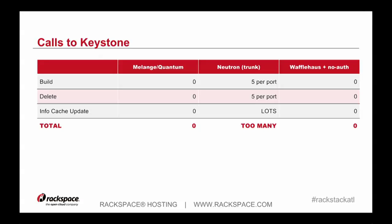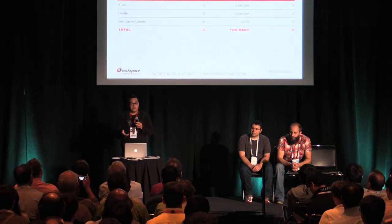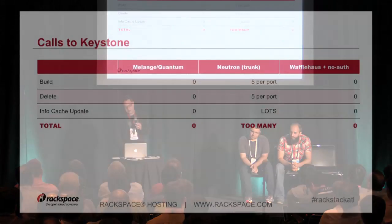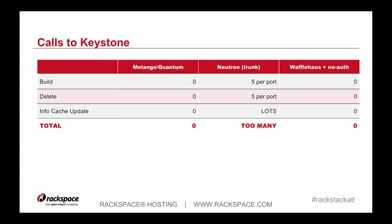The primary reason we used Waffle House was because there were a lot of calls to Keystone whenever Nova and Neutron were interacting. Before, when we had Melange and Quantum, none of those calls were ever reauthorizing or contacting Keystone. But then when we went to Neutron, by default every single request would hit Keystone — is this token valid? Given the amount of traffic we had and the amount of infocache updates, it turned out to be debilitating. What we did is added no-auth support to Neutron, and using Waffle House we were able to actually make it work.